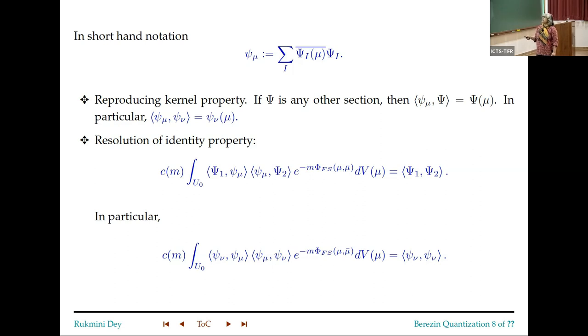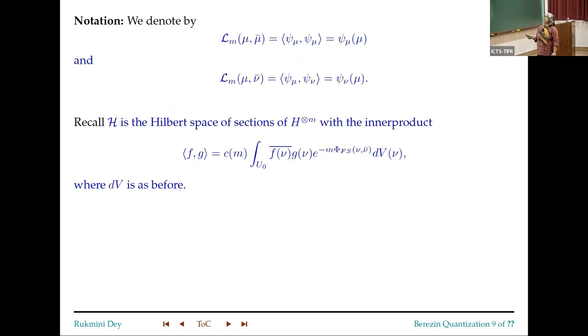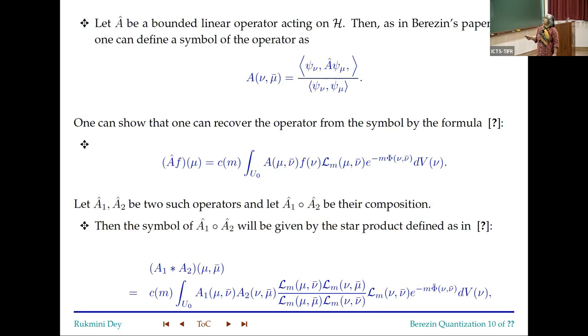This is one way of writing the coherent states. So we will write it like this. And so it has very nice properties, resolution of identity, reproducing kernel property and so on. I'm skipping all this a bit because time is a little limited. And l_m(μ,μ̄), I'm going to denote it as l_{μ,μ̄} and l_m(μ,ν̄) as ψ_{μμ̄} and this is ψ_{νμ}. And the inner product is this, remember, where dV was the volume form on CP^N.